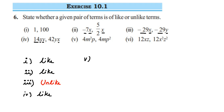The fifth one: 4m²p and 4mp². We have variables m and p in both, but check the powers. In the first term, m is squared (two m's) but only one p. In the second term, p is squared (two p's) but only one m. So we must consider the power, and they are unlike terms.